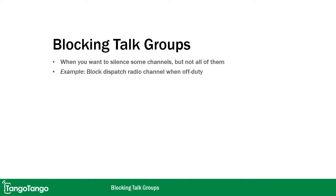Blocking talk groups is when you want to silence some channels but not all of them. A good example of this is if you have a talk group that is a Tango Tango LMR integrated channel, such as a dispatch channel — you probably don't want to hear that channel all the time, especially when you're off duty.